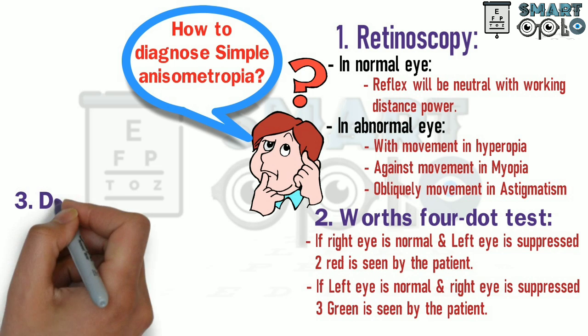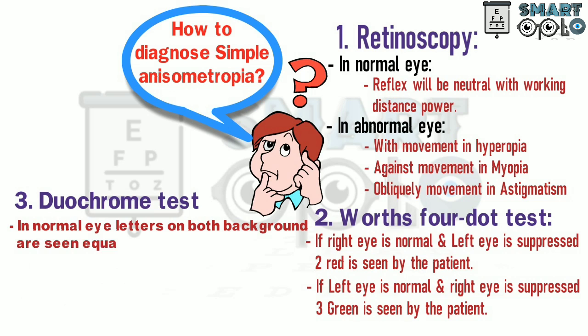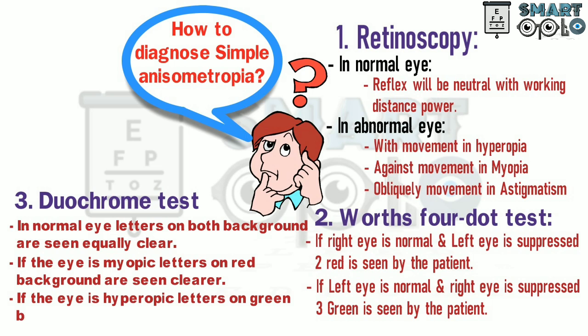The third is the duochrome test. In a normal eye, letters on both the red and green backgrounds are seen equally clear. If the eye is myopic, then letters on the red background are seen more clearly. If the eye is hyperopic, then letters on the green background are seen more clearly.